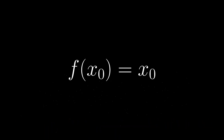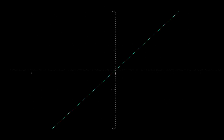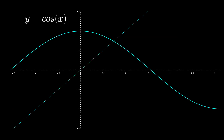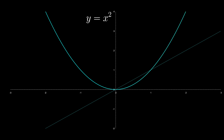A fixed point of a function is a value that is mapped to itself by the function — that is, f(x) = x. Graphically, the fixed points are wherever a function crosses the diagonal y = x. For sine, we see that it crosses at x = 0. For cosine, it crosses here. And x squared has two fixed points, at zero and at one.